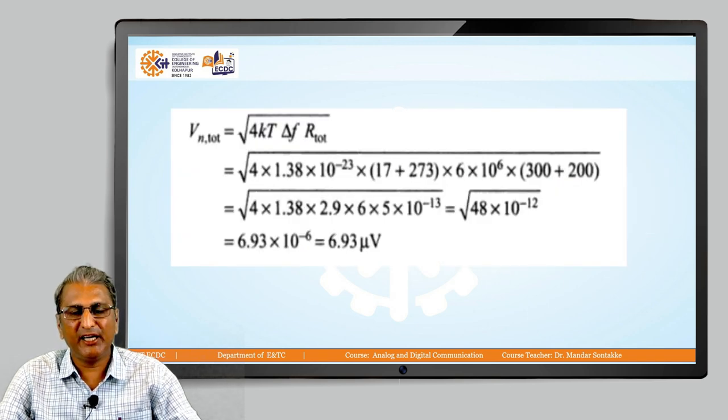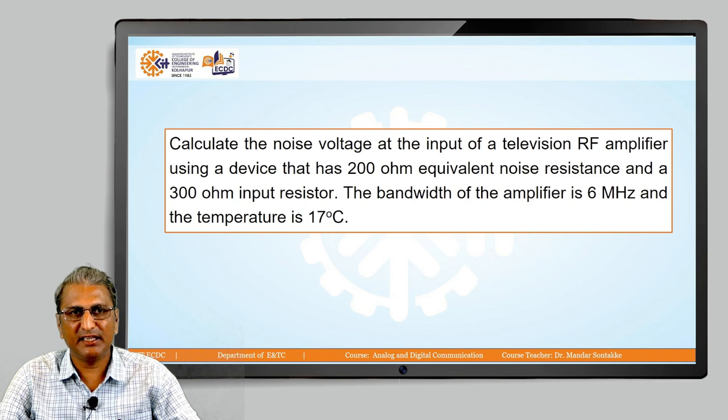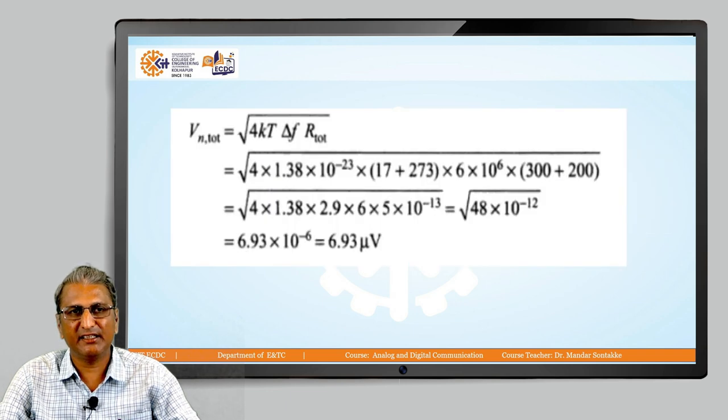The Vn total, that is the total noise voltage, because we have two resistors, one value is 200 ohm, second is 300. The formula is square root of 4kTΔf times r total. Square root of 4, the value of k is 1.38 × 10^-23.